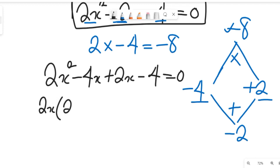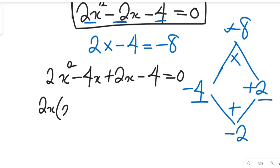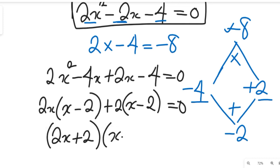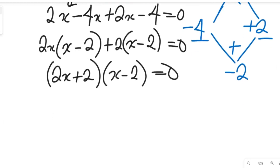Now we simplify by grouping. From the first two terms, 2x is common, giving us 2x times the quantity x minus 2. From the last two terms, 2 is common, giving us positive 2 times the quantity x minus 2. So we bring out the common factor: 2x plus 2, multiplied by x minus 2, equals 0.